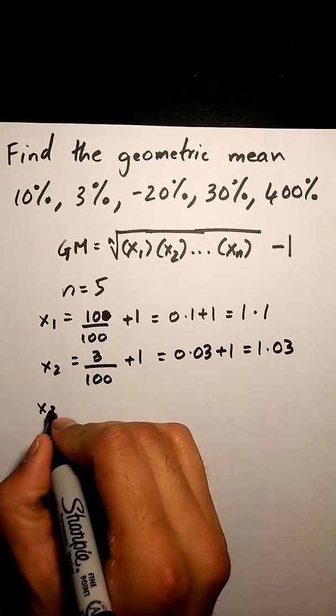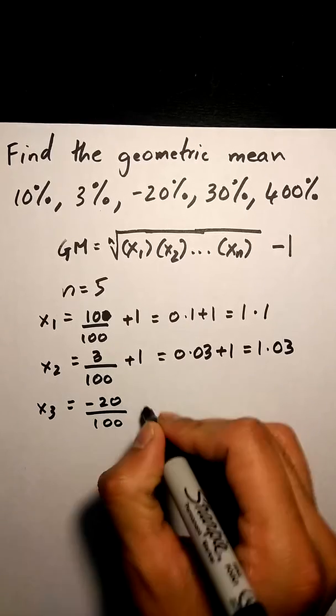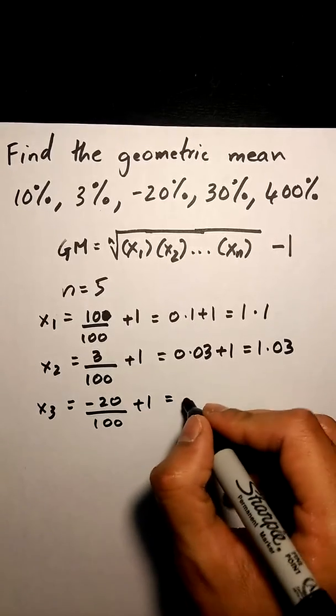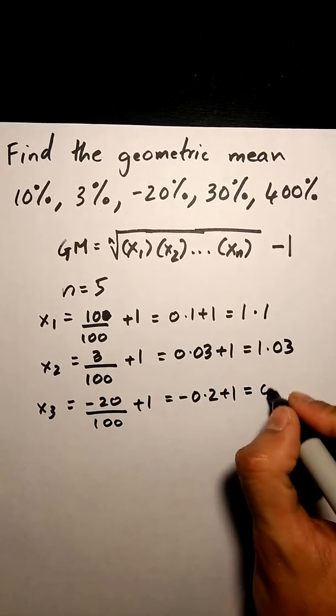Similarly, my x3 is negative 20 divided by 100 plus 1, which is negative 0.2 plus 1, which is 0.8.